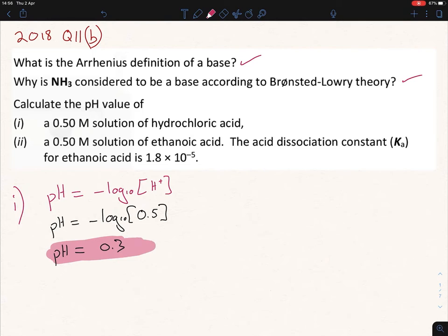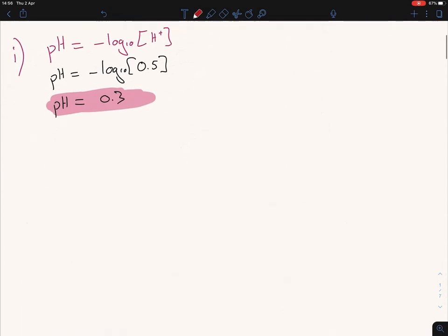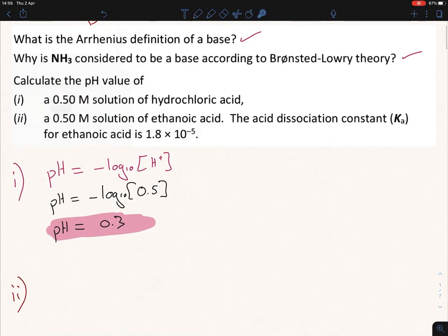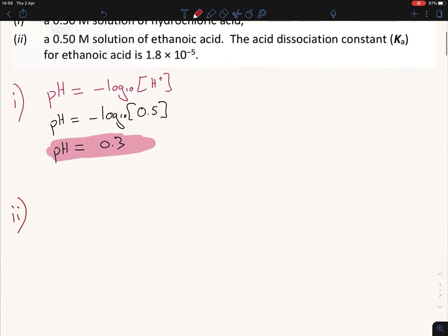That makes sense, because HCl is a strong acid, and a strong acid in terms of the pH scale is anything really that should be less than 2. So, the next question is, (ii) is asking us to calculate the pH value again of ethanoic acid. Now, all carboxylic acids are weak acids automatically, and you're already told that it is a weak acid because you're given the acid dissociation constant, 1.8 times 10 to the minus 5. So, we use a slightly different formula for this one.